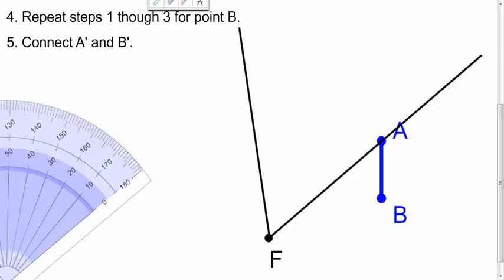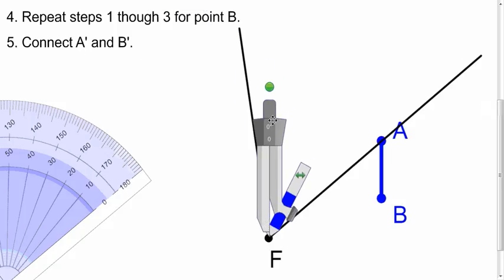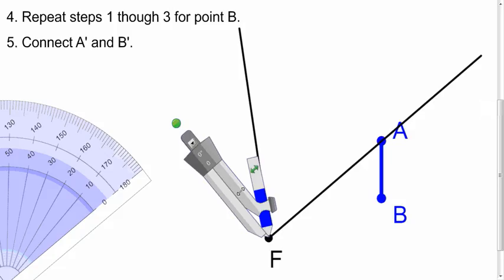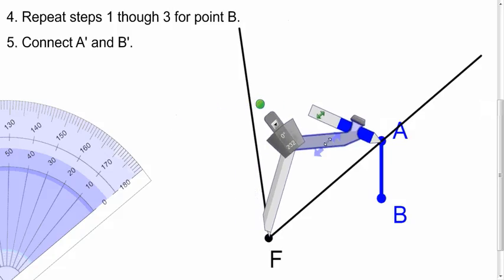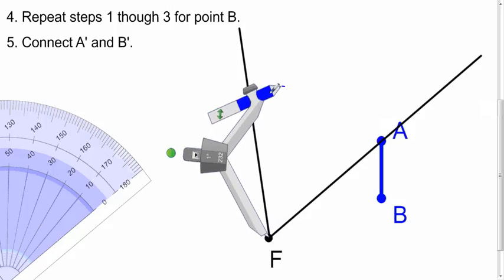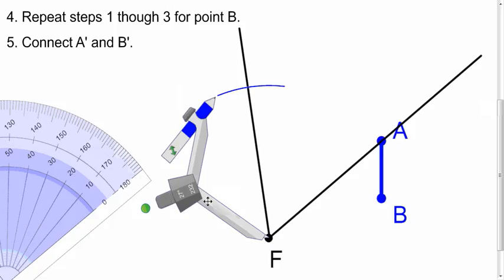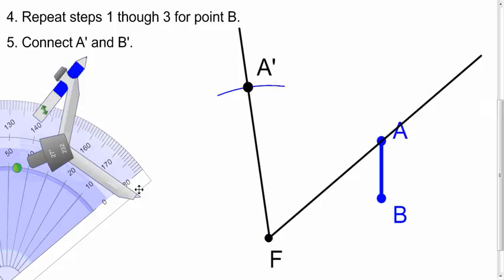Now I want to figure out where exactly on this side is A prime going to be. So do that, take out your compass, put the center on F, and open it up to A. So this is the distance from F to A. So if we just draw an arc over here, where it crosses, that's going to give us A prime. I'm going to draw a point there, and I'm going to label it A prime. Okay, there's A prime.